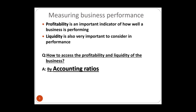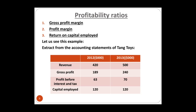The business uses the income statement and balance sheet together with ratios to assess performance. Remember, these ratios should be used to compare against other businesses or against previous years to see what's going on — why we are doing well or why we have problems. Let's start with profitability ratios. We have three: gross profit margin, profit margin, and return on capital employed.